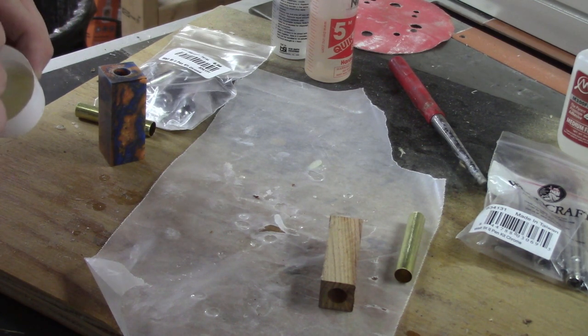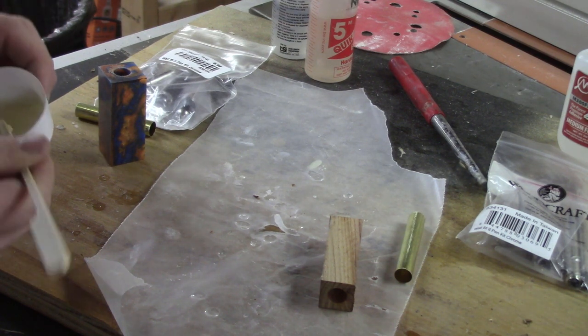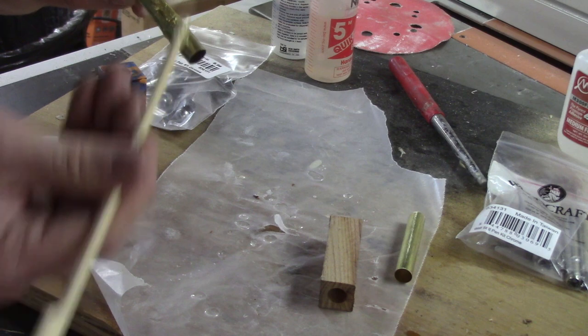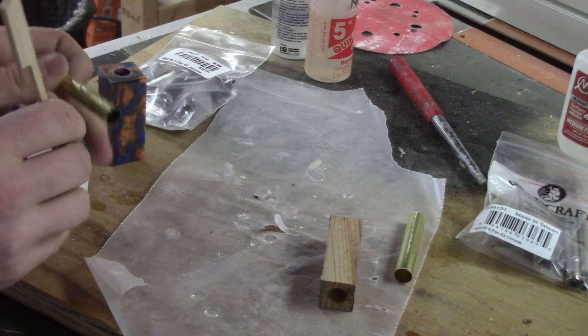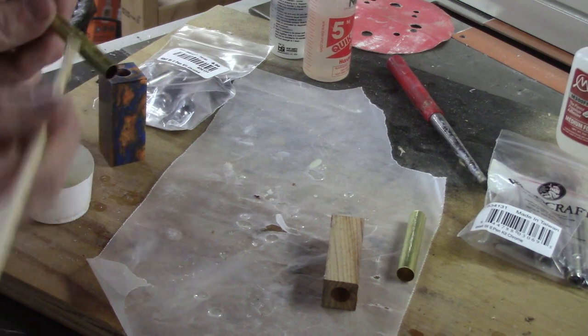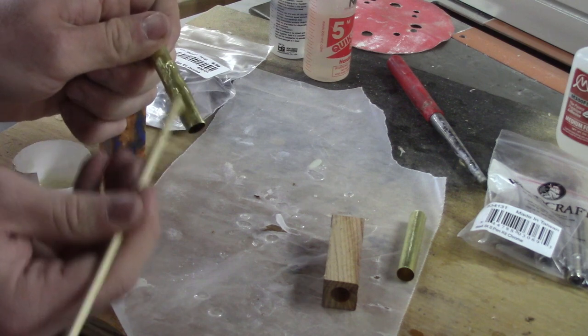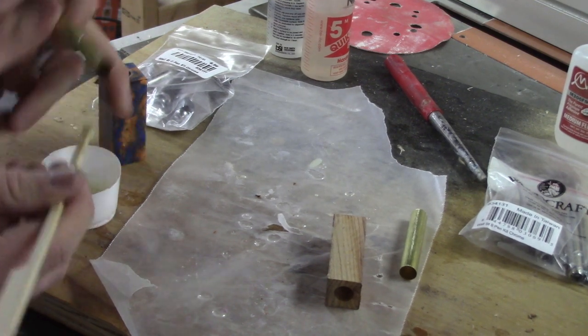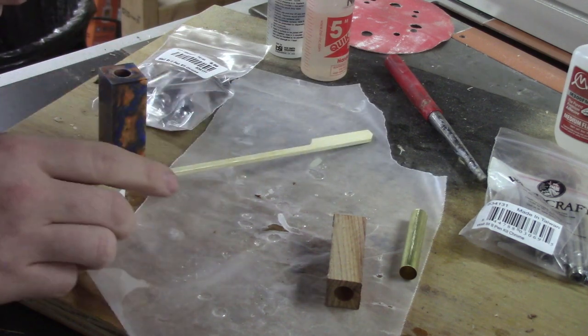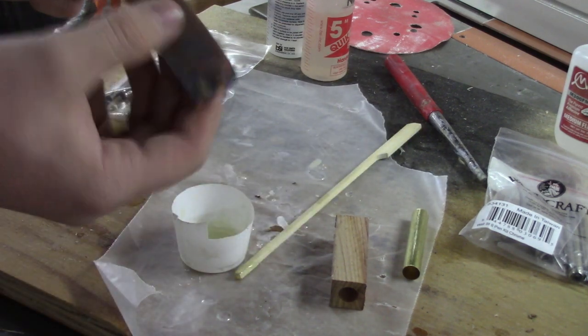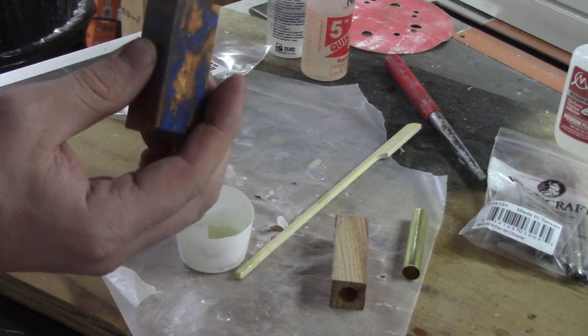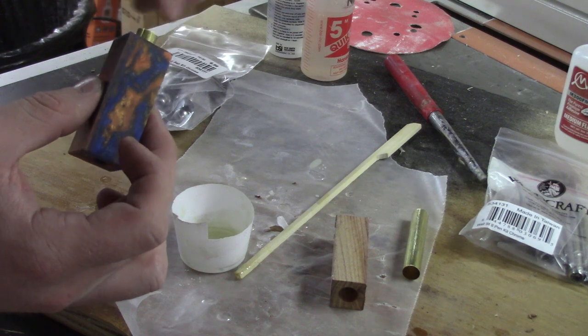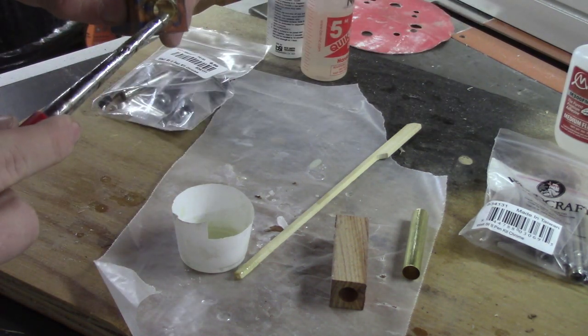We're just going to mix this epoxy up and then we are going to glue our tube into our blank. So once we've got this mixed up, we're going to take the epoxy and we're just going to coat the tube. Just get it all over. This doesn't have to be nice and neat. It can be messy because we will clean everything up later. Now when I go to insert my tube, I'm going to work this in just a little bit, twist this around, make sure the glue gets all over the tube.